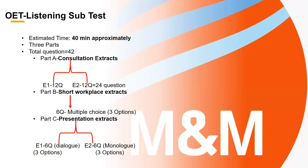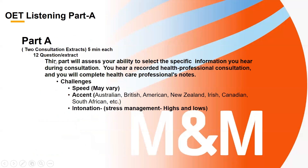In part A, the purpose is to assess your ability to extract specific information. The plus point in part A is that you hear a recorded conversation and you just need to keep track, because there is very little paraphrasing. The challenge you may face is speed — both the speed at which they are speaking and the speed at which you are writing, because you need to listen and write at the same time with no extra answer time given at the end of part A.